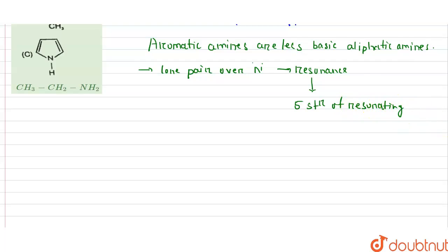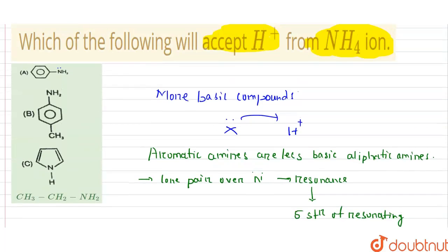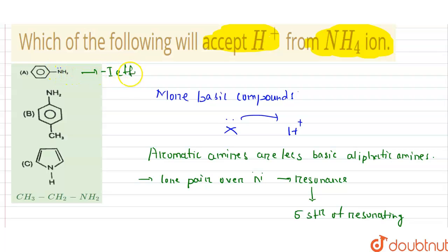These are the less basic aromatic amines. If we check the first option, here you have the nitrogen with a lone pair over the nitrogen which acts as the minus I effect. So it is a less basic structure, and it could not be our answer — it is the wrong answer.